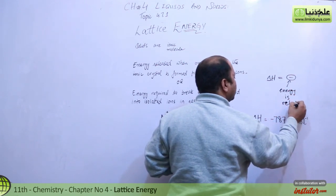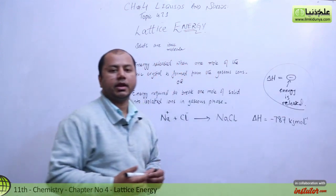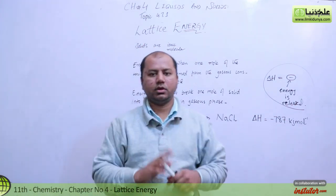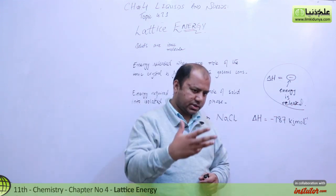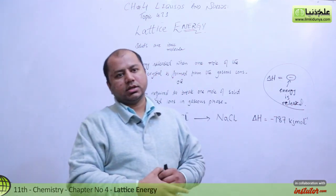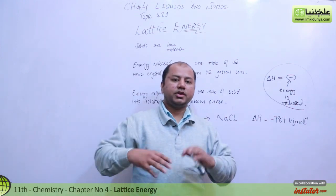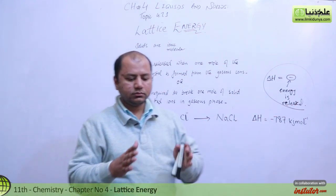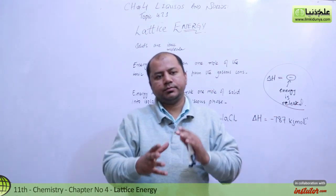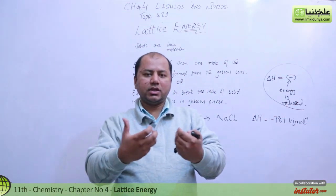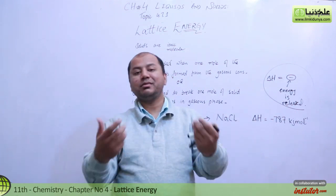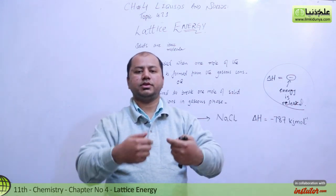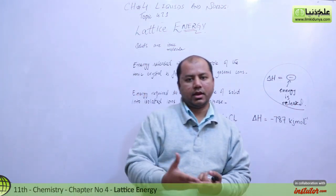This is the most important thing: students need to understand what the negative sign means. When ions come close and form a formula unit or molecule, energy is released — that released energy is what we call lattice energy. Sometimes the reverse happens: if a lattice is already formed and you separate the ions, you need some energy to do that.